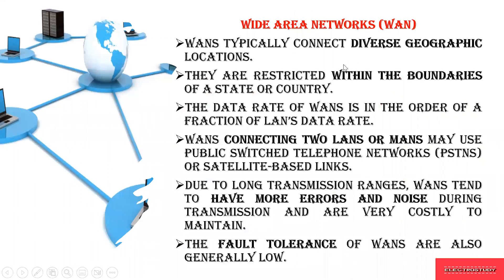Next is Wide Area Network. As the name specifies, the connectivity and range of WAN is much larger compared to LAN. It gives a diverse geographical location to access data, but with restrictions like within the boundaries of a state or country. The data rate of WAN is in the order of a fraction of LAN's data rate. WAN can be formed by connecting two LANs or two MANs together.